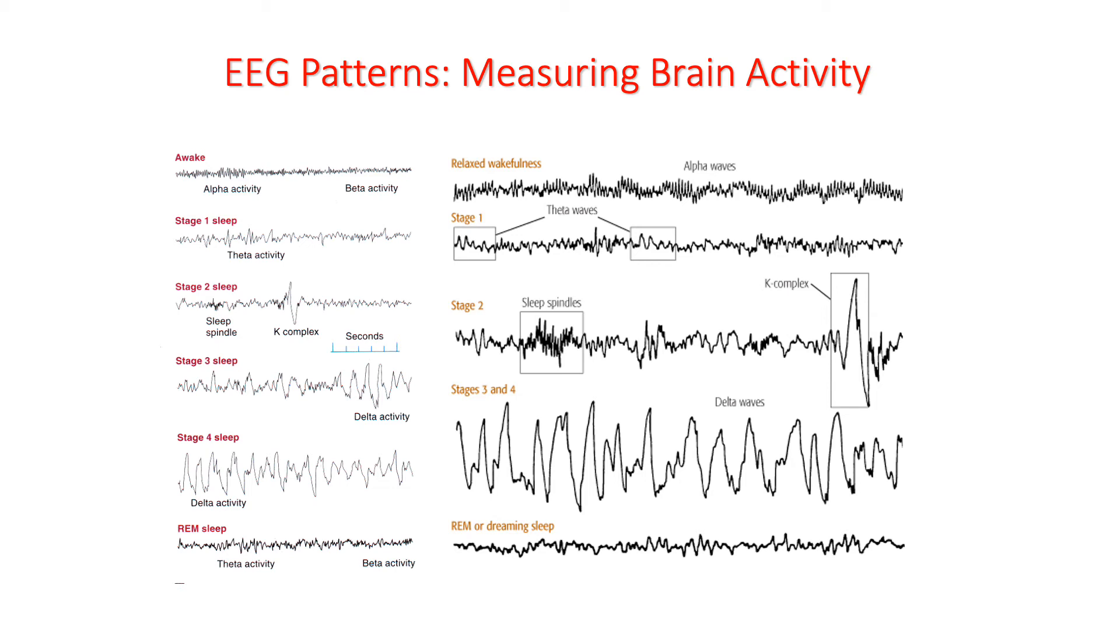REM sleep is sometimes called paradoxical sleep because even though you're very, very deeply asleep, the brain waves look very much like the beta waves you see in a person who's awake, alert, and highly focused. They're very high frequency, very low amplitude, and this brain wave pattern is quite different than you would expect from a person who's very deeply asleep.